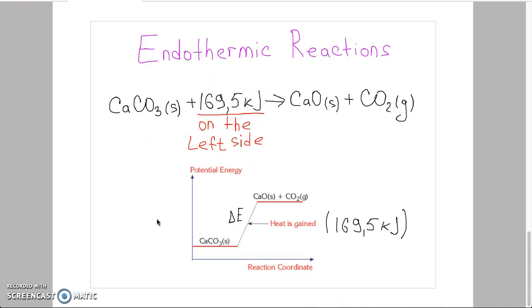The energy diagram shows that the total potential energy of reactants is smaller than total potential energy of products. The energy difference is the amount of heat that must be introduced to the system or delta E. It means that heat is gained.